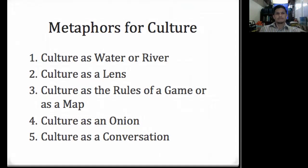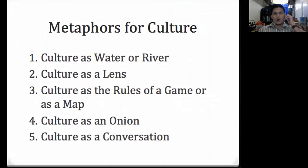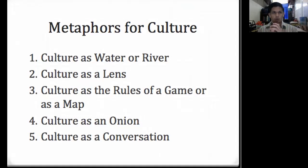Third, culture as rules of a game or as a map: we use rules and maps as direction and as a guide. However, these metaphors are weak because they suggest that culture is unchanging, rather than the reality that culture is dynamic and changing. Fourth, culture as an onion: the onion has different layers. The onion metaphor illustrates that culture has many levels — from shallow to deep. The shallow includes behavior and material products, going deeper to values and beliefs, and at the center is the worldview — the deepest assumptions about what life really is and how it works.